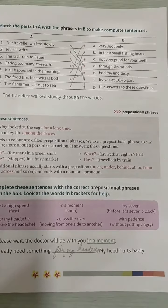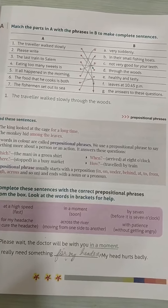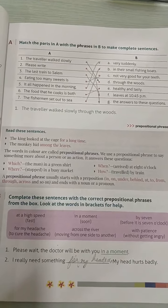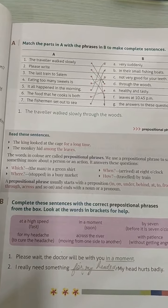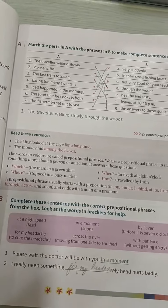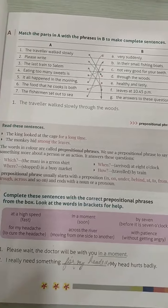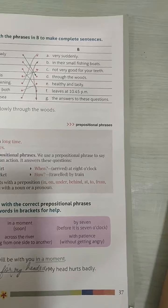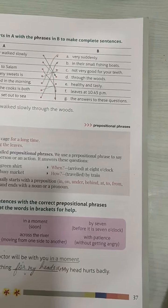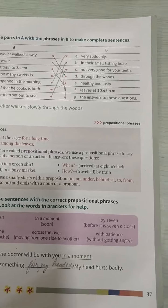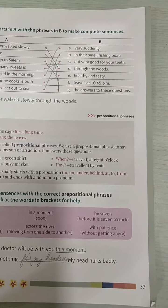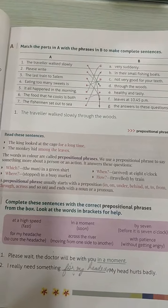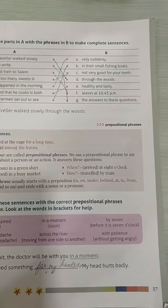Prepositional phrases tell us position and more. A preposition shows the relation between noun and pronoun. Whereas a prepositional phrase tells more about the person or action — where, when, how. When arrived? At 8 o'clock. How did they travel? By train. So: which man? The man in a green shirt. Where did it stop? In a busy market. When did he arrive? At 8 o'clock. How did he come? By train.